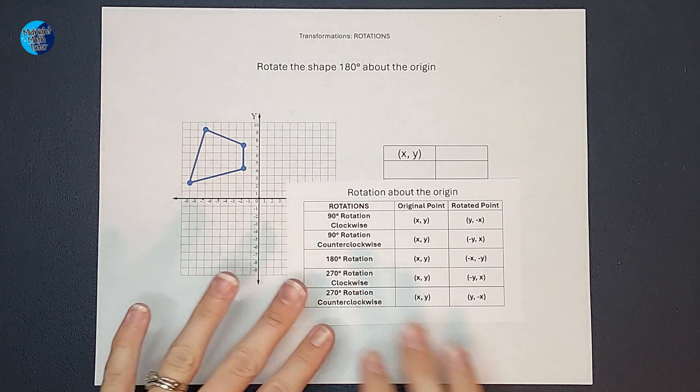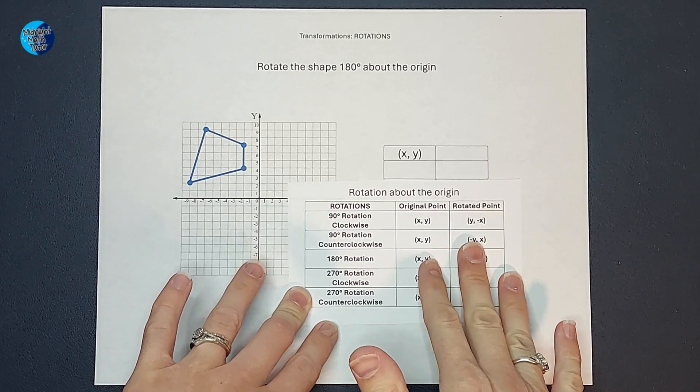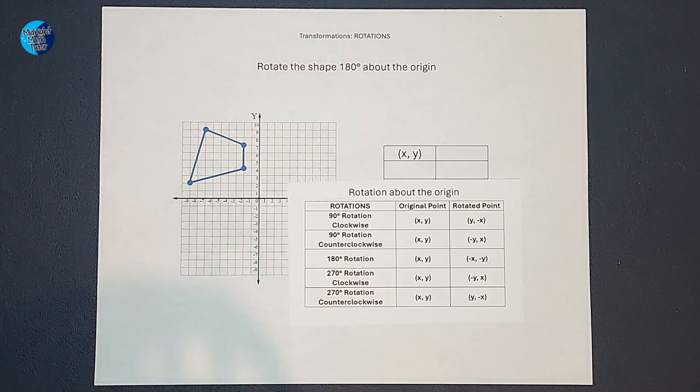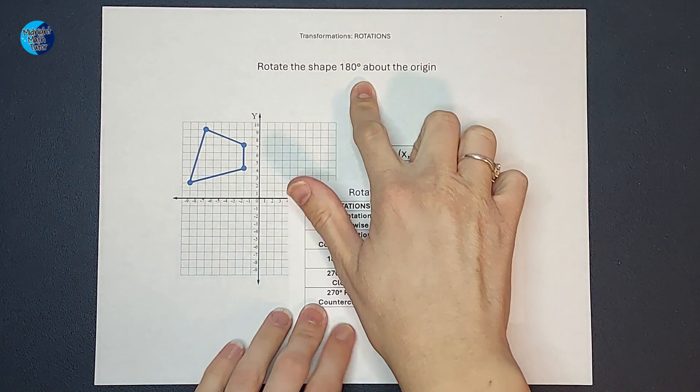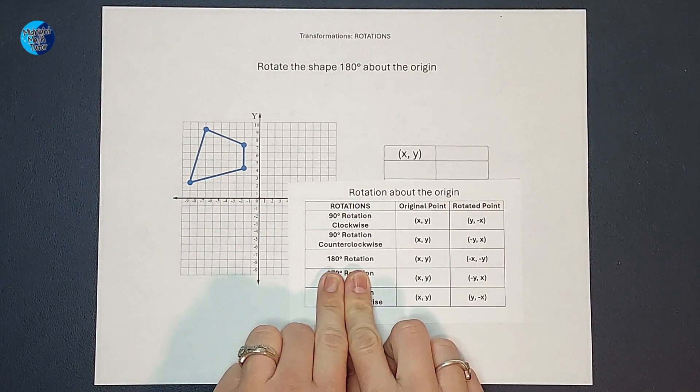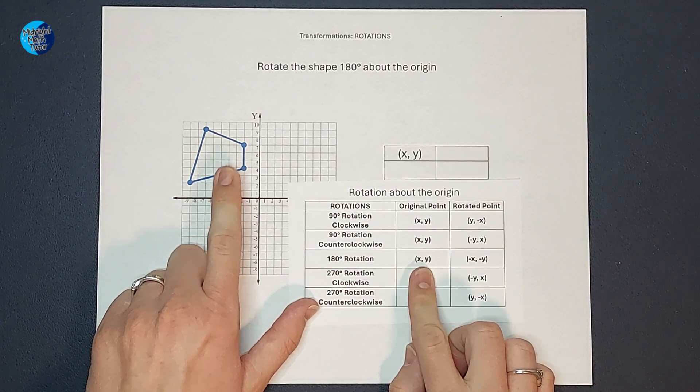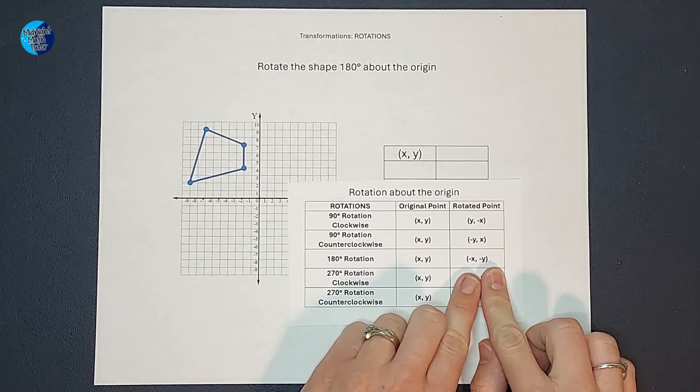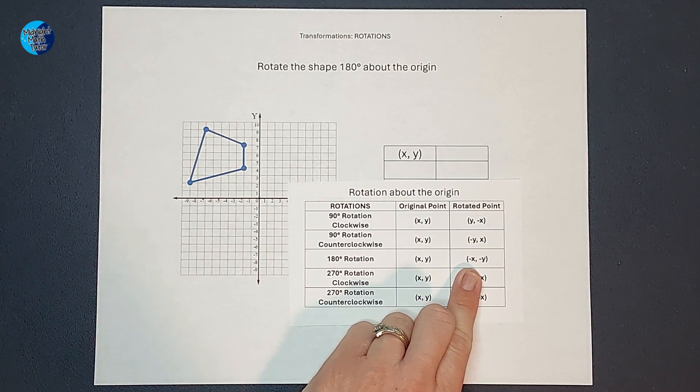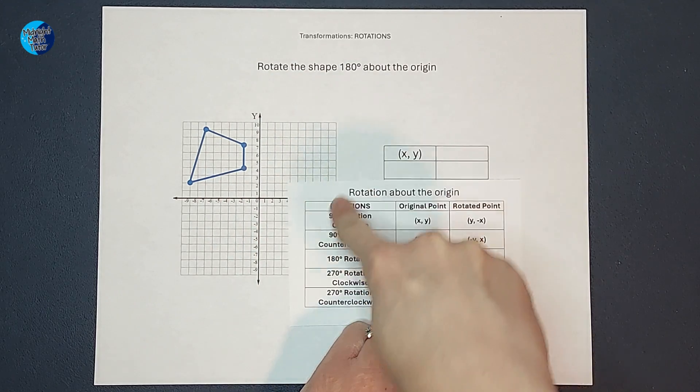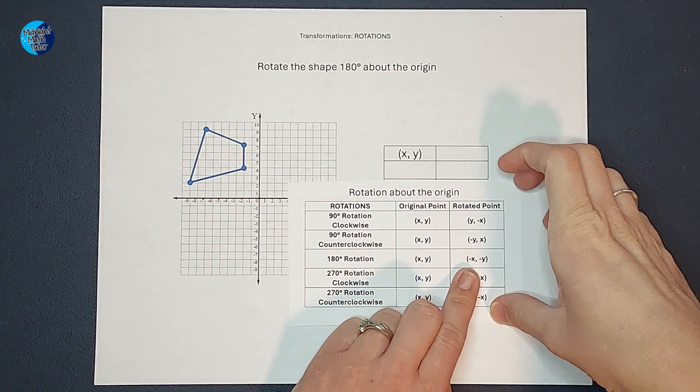And also where it explains why these rules work, because I don't love to just give you rules and not tell you why they work. So that will be in there as well. But when we are rotating a shape 180 degrees, all we have to do is find our original points, our original coordinates, and change the signs of X and Y. That will give us this same shape rotated 180 degrees.